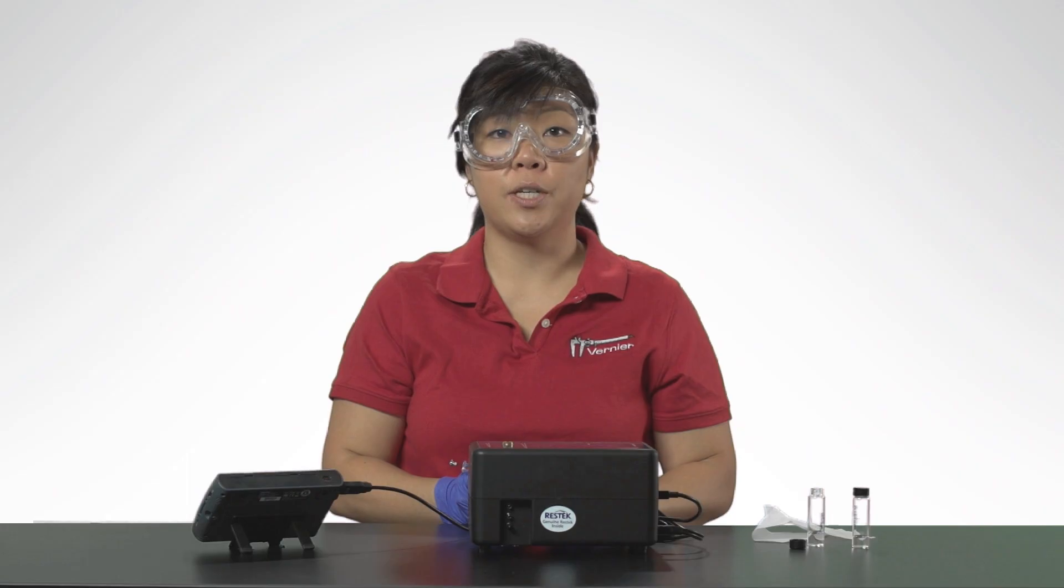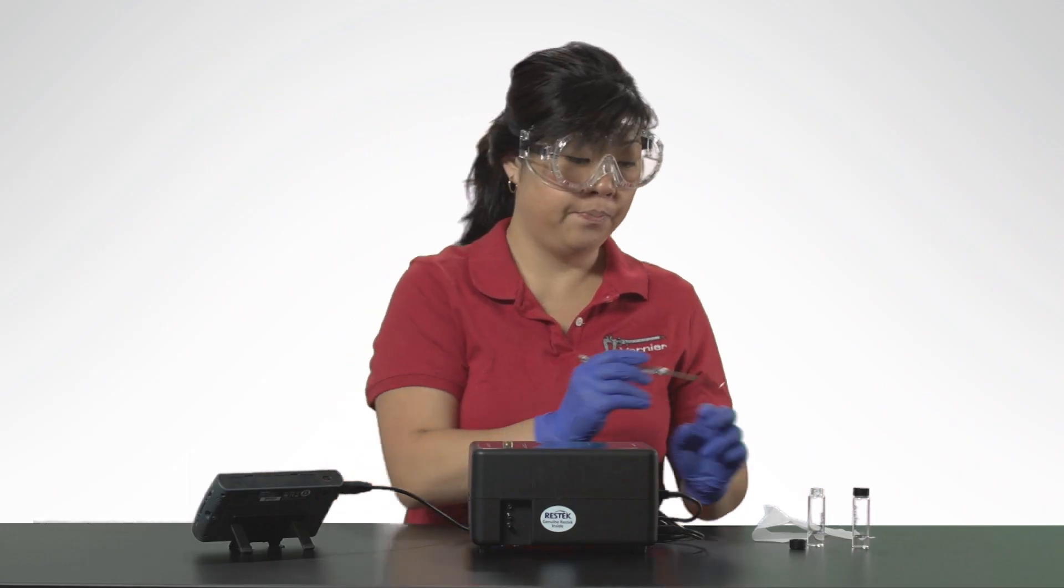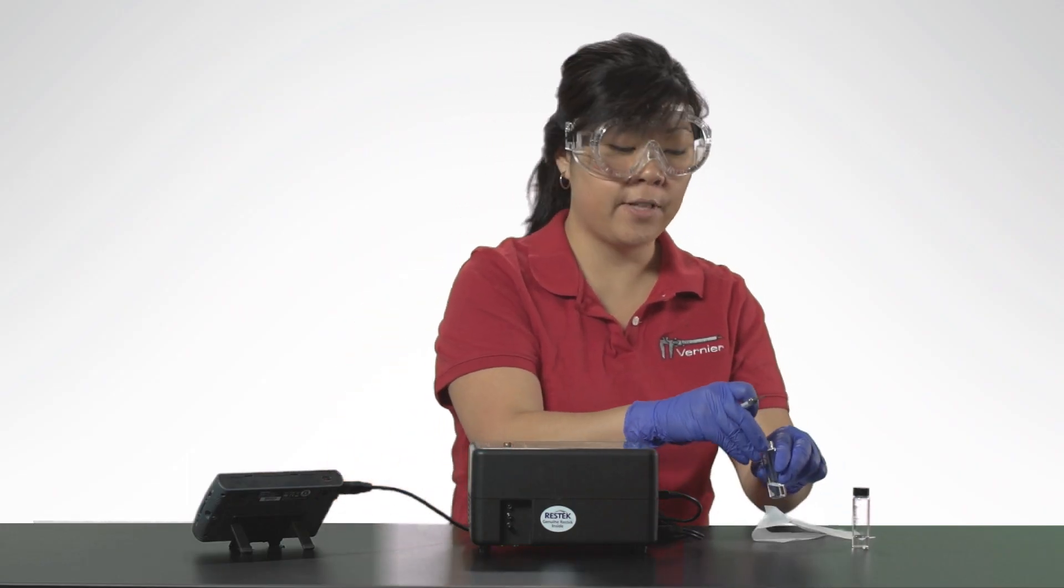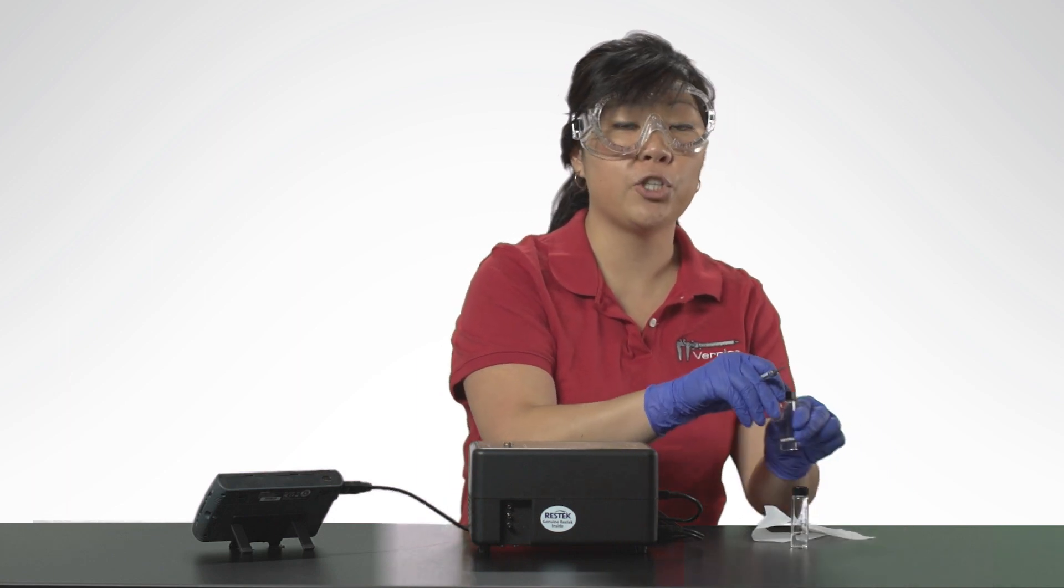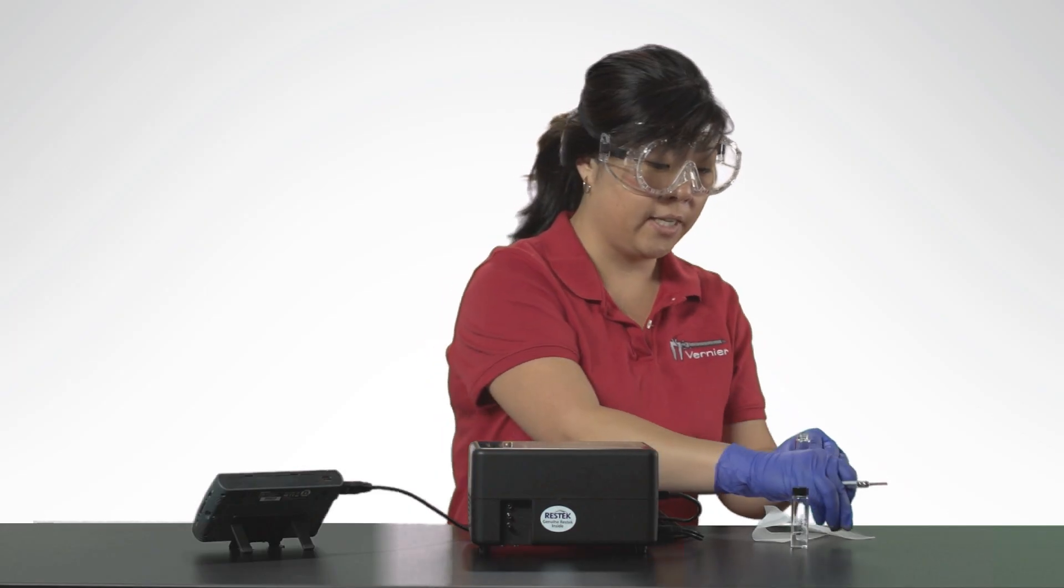While the data collection proceeds, thoroughly clean the syringe and needle with acetone. It may take more than three flushes to feel the syringe plunger move smoothly again, which is your indicator that the syringe and needle are both suitably clean.